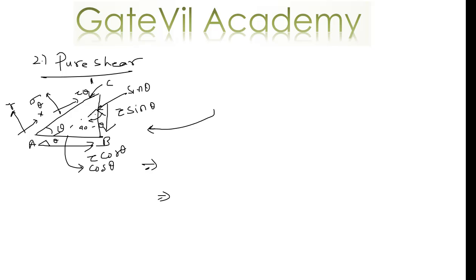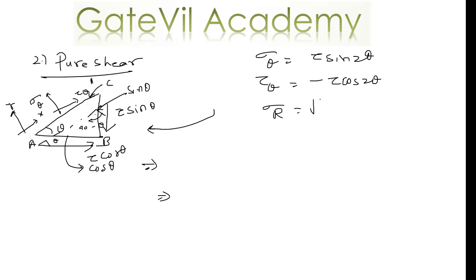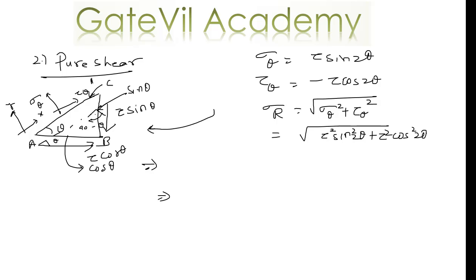The resultant stress for pure shear is the square root of sigma theta squared plus tau theta squared, which is the square root of tau squared sine squared 2 theta plus tau squared cos squared 2 theta. Tau comes out of the root and sine squared 2 theta plus cos squared 2 theta equals 1, so the resultant stress equals tau.